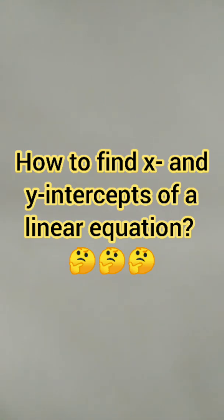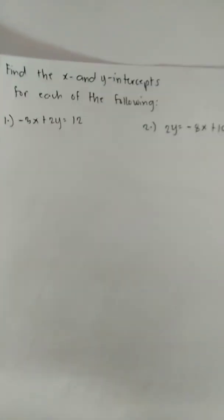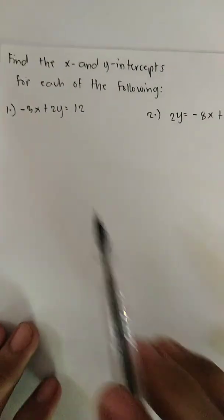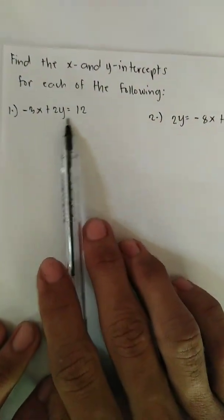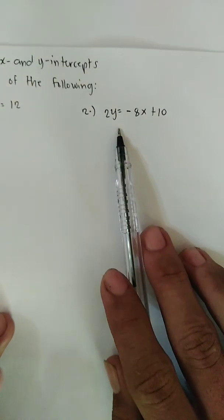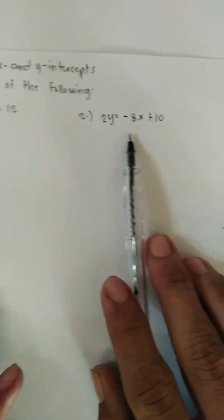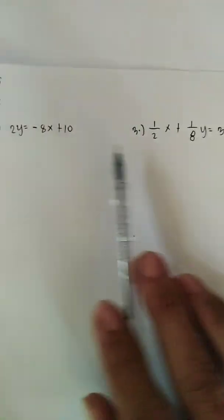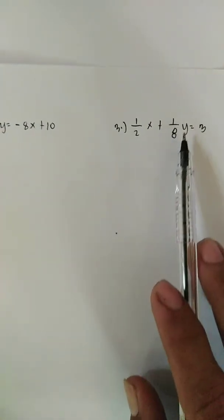Our main goal here is to solve for the x and y intercepts of a linear equation. Let us have examples to be solved in this video. For number one: negative 3x plus 2y equals 12. For number two: 2y equals negative 8x plus 10. For number three: one-half x plus one-eighth y equals 3.